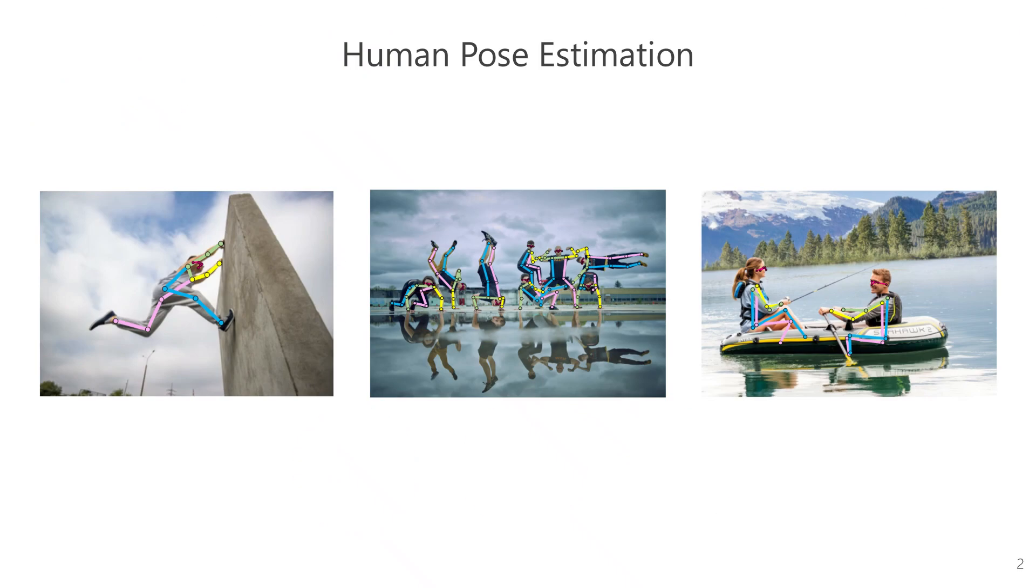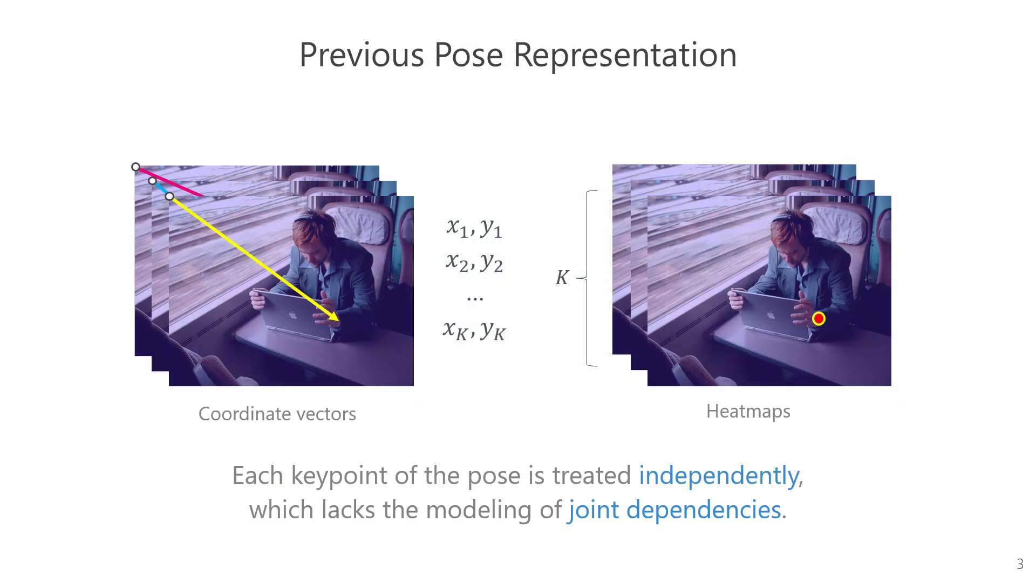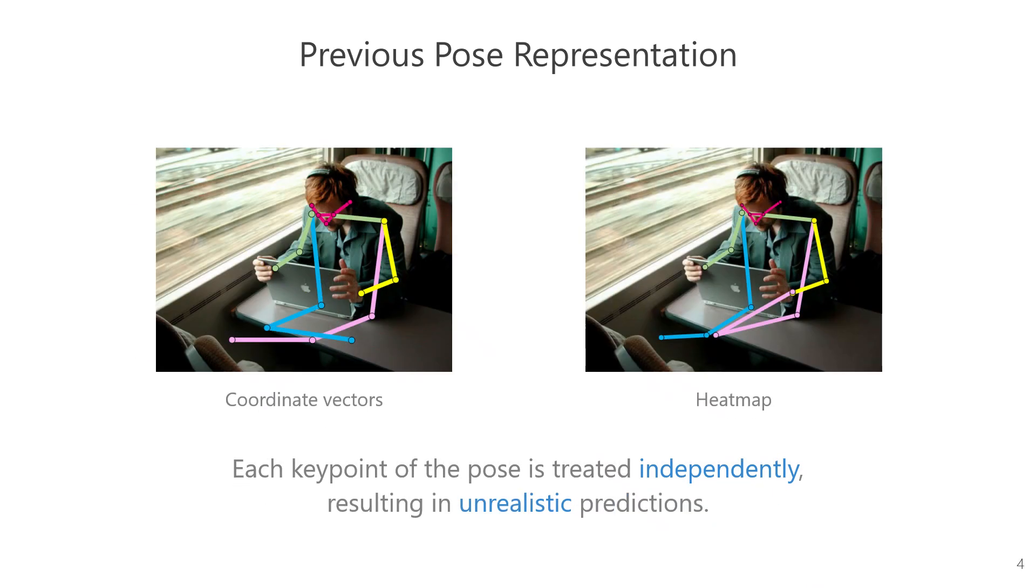Human pose estimation aims to predict keypoints for all individuals in an image. Previous methods often directly predicted the 2D coordinates of each keypoint or represented each keypoint as a heatmap. Both representations treat each keypoint independently, failing to consider the pose as a holistic entity. Consequently, previous methods led to unreasonable predictions.